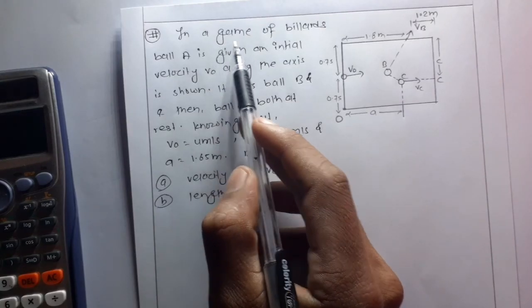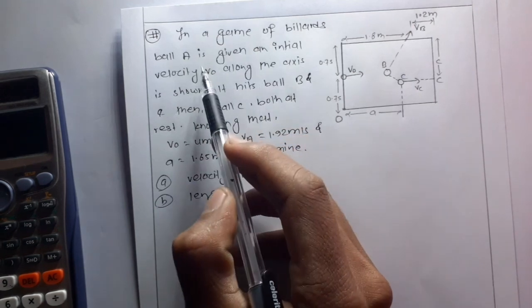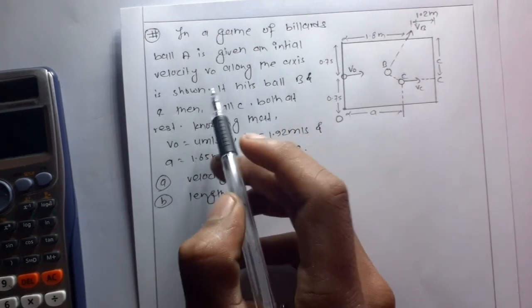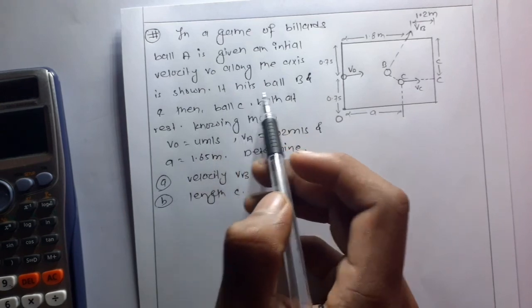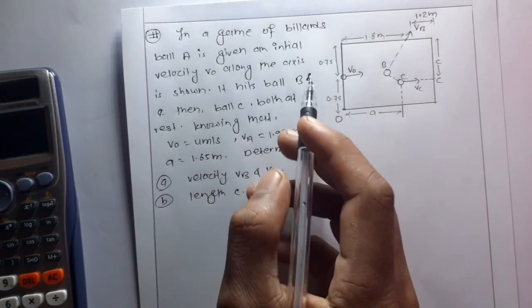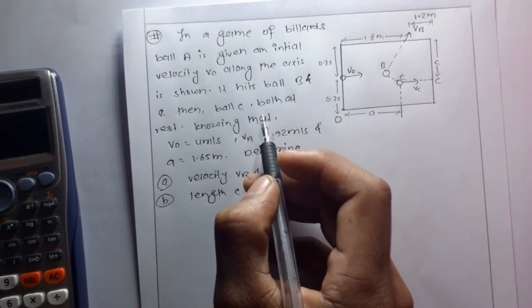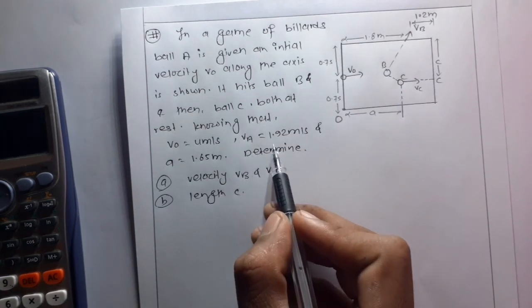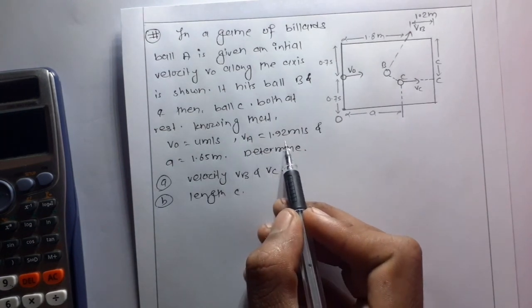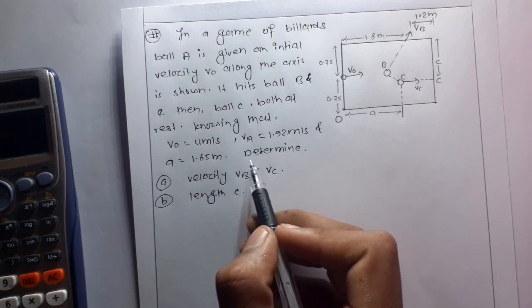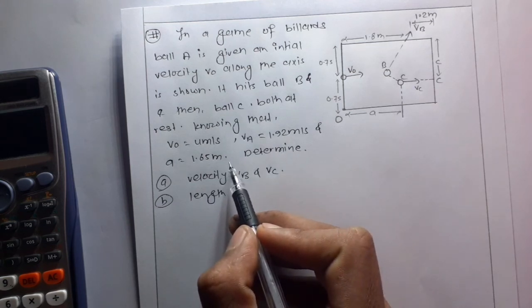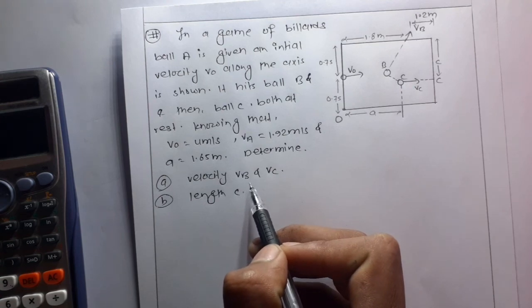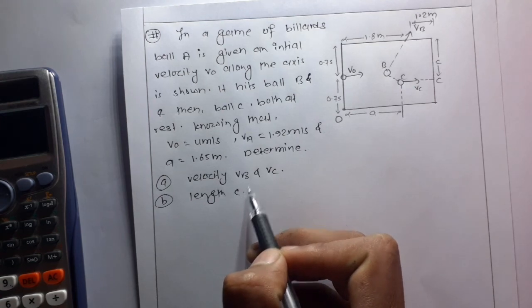The question is: in a game of billiards, ball A is given an initial velocity v0 along the axis shown in the figure. It hits ball B and then ball C, both of which are at rest. Knowing that v0 is equal to 4 meters per second, vA is equal to 1.92 meters per second, and A is equal to 1.65 meters, determine the velocity vB and vC and the length C.